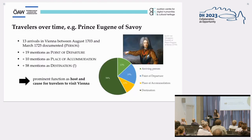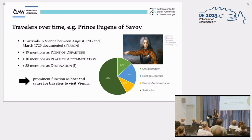Interestingly, Prince Eugene is not only mentioned as an arriving person, but also mentioned 19 times as a point of departure, 10 times as a place of accommodation, and a full 58 times as a destination. So the arrival lists show us that Prince Eugene frequently functioned as a host and as a cause for travelers to actually visit Vienna, giving us insights into various socio-cultural roles he took on in his lifetime and his social connections.